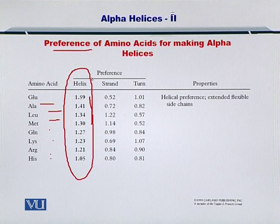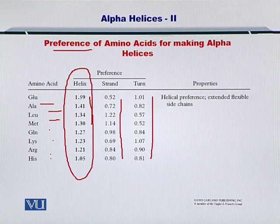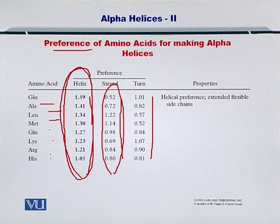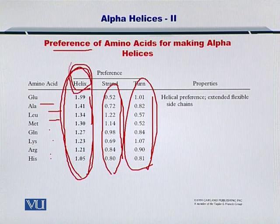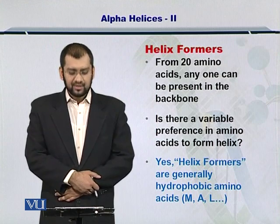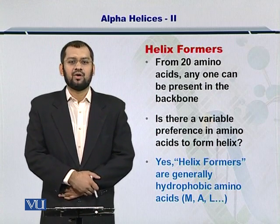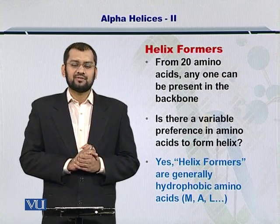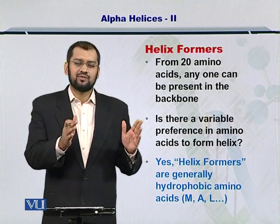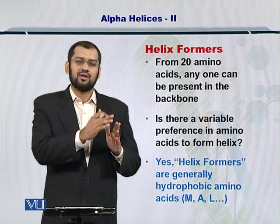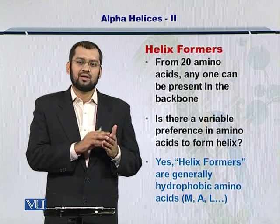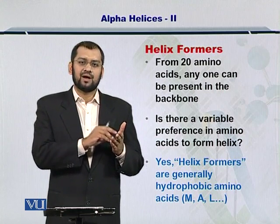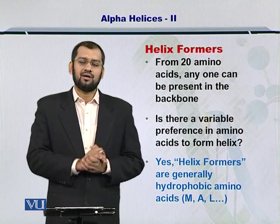The numbers shown in this table tell you about the preference of these amino acids to participate in the formation of the alpha helix. Clearly they are very high as compared to the formation of a strand or a turn. We are going to study strands and turns later. So by looking at these values, which are greater than the values shown here, you can assume that these amino acids prefer to form helices. From the 20 different amino acids, only a few have a propensity to form a helix, and there is different propensity even within those amino acids that prefer to form a helix.